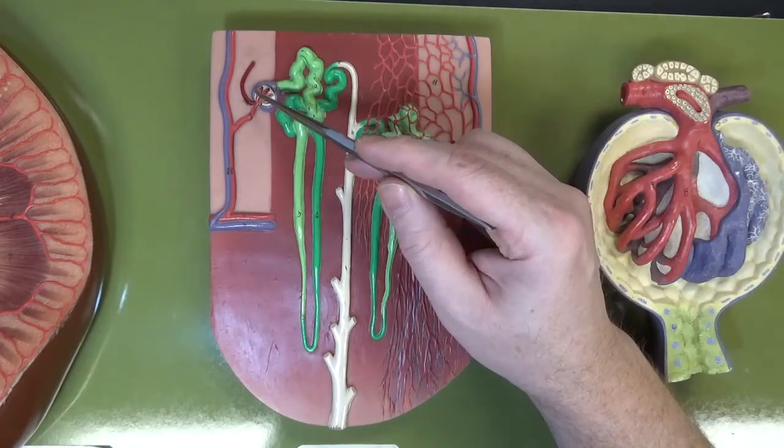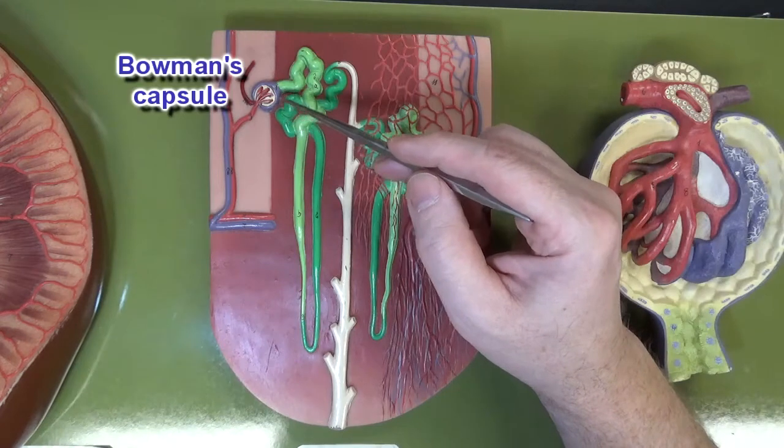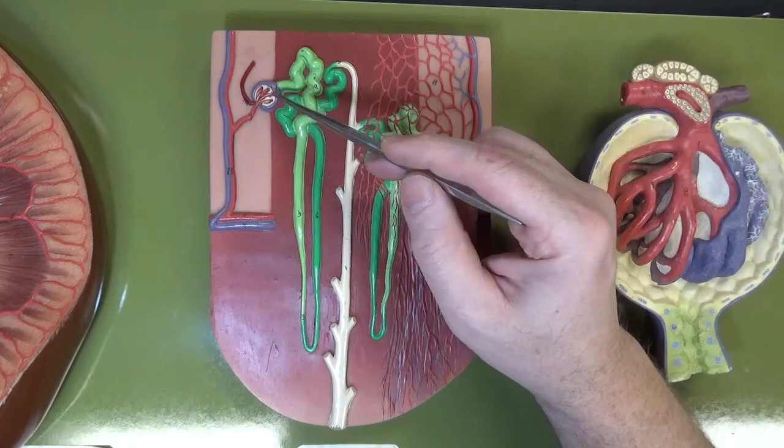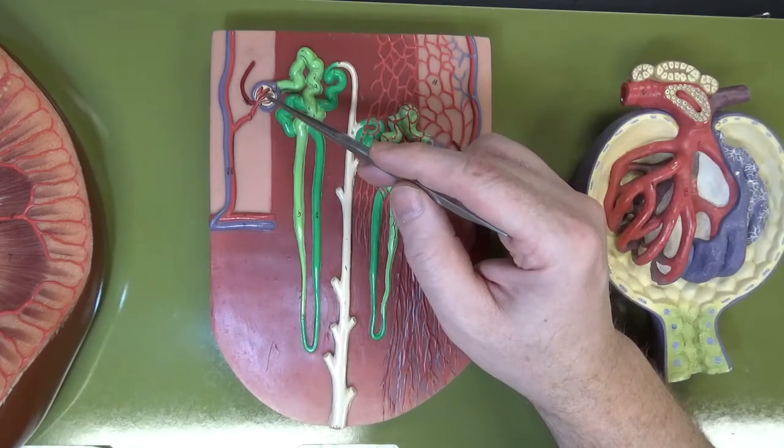So this purple thing right here, this is Bowman's capsule or the glomerular capsule, and what it's going to do is catch the filtrate that comes from the glomerulus.